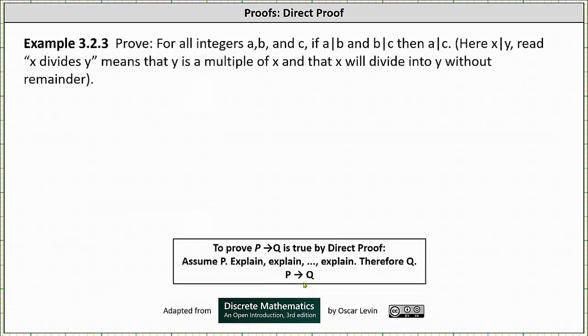A direct proof takes the form of if P then Q. For example, we will prove for all integers A, B, and C, if A divides B and B divides C, then A divides C.